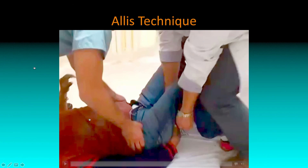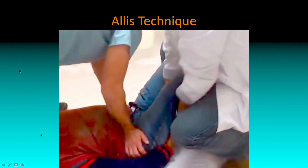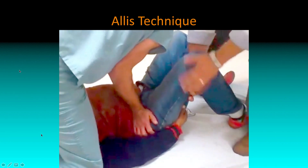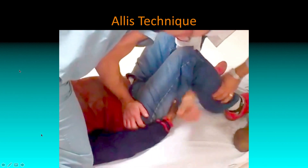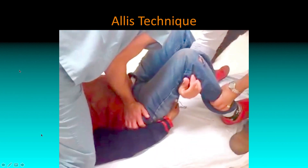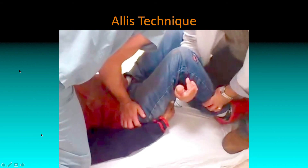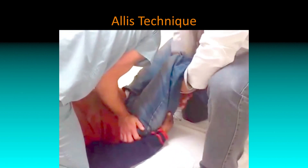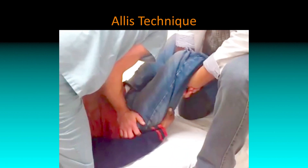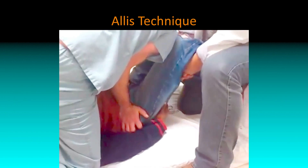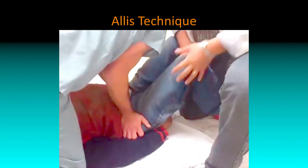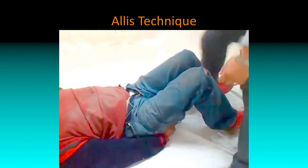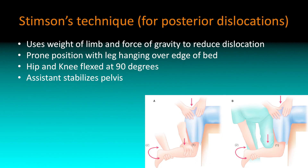Is this for posterior or anterior? The Allis technique can actually be used for both — it works for anterior obturator dislocations as well as posterior dislocations. Knee flexed, hip flexed, pulling up, then turning and it goes in.